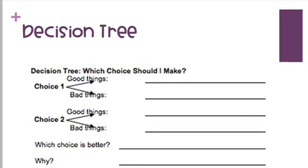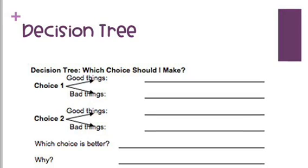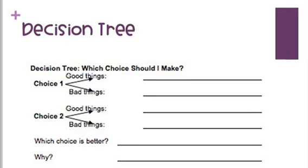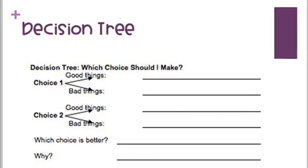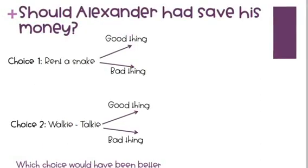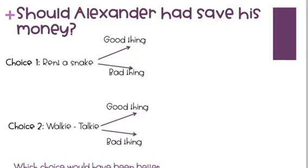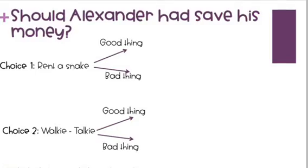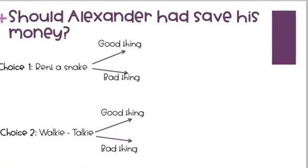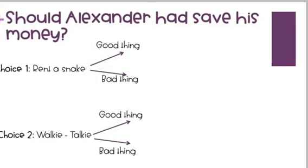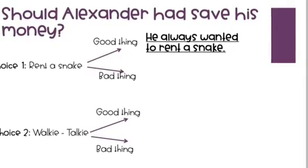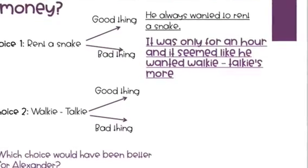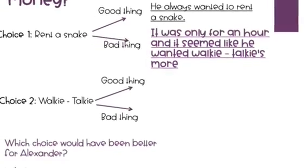Let's take a look at this graphic organizer called a decision tree. It's going to help us decide if Alexander made the right choice. You can also use this tree when you have choices to make and can't decide which is most important. Should Alexander have saved his money? Choice one is that he had the choice to spend on anything he wanted — let's say renting a snake. The second choice is that maybe he should have saved his money for a walkie-talkie. For renting a snake, the good thing is that he always wanted to do it. But the bad thing is that it was only for an hour, and it seemed like he really wanted the walkie-talkie a lot more.